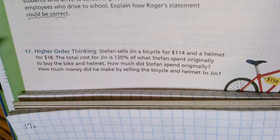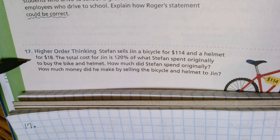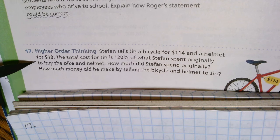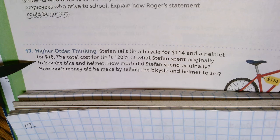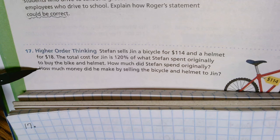Number 17, page 227, Higher Order Thinking: Stefan sells Jin a bicycle for $114 and a helmet for $18. The total cost for Jin is 120% of what Stefan spent originally to buy the bike and helmet. How much did Stefan spend originally and how much money did he make by selling the bicycle to Jin? So let's break this down.